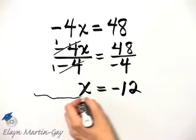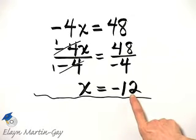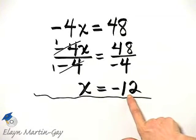So once I have X by itself, I see that my solution for X is negative 12.